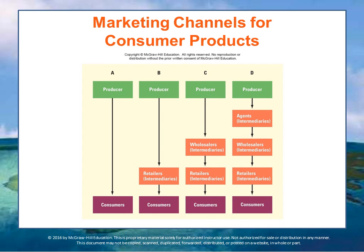The typical market channels to consumers are shown in the figure on this slide. In Channel A, the product moves from the producer directly to the consumer. Farmers who sell their fruit and vegetables to consumers at a roadside stand might be an example of this, but also increasingly producers that sell on the internet and ship directly to customers.